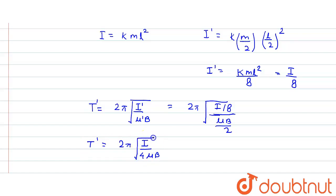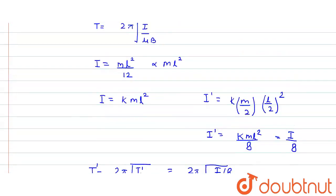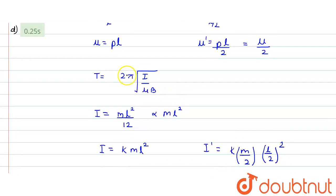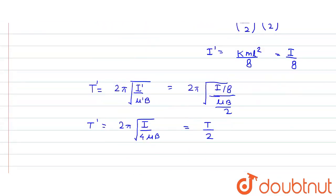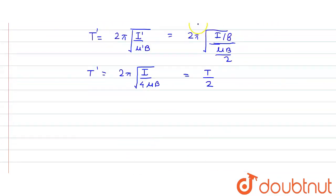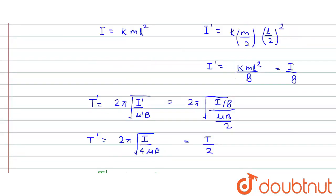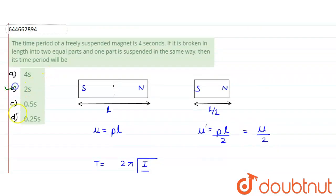This simplifies to (1/2)·2π√(I/μB), which is T/2. Since the initial time period T = 4 seconds, the new time period T' = 4/2 = 2 seconds.